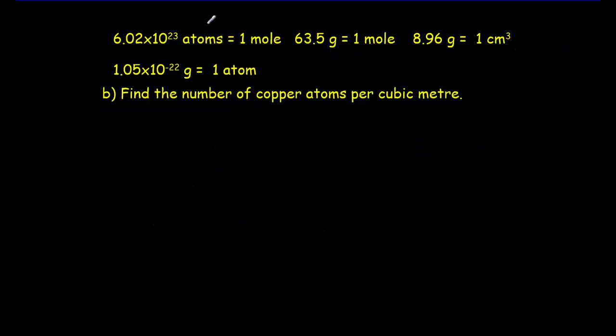I've just written down my conversion factors again. This is Avogadro's number. This was the molar mass. This was the density. And this is from part A. That's what I learned in part A, that 1.05 times 10 to the minus 22 grams is equal to one atom of copper. So what I want to do now is find the number of copper atoms. So I want to find out atoms in a meter cubed.